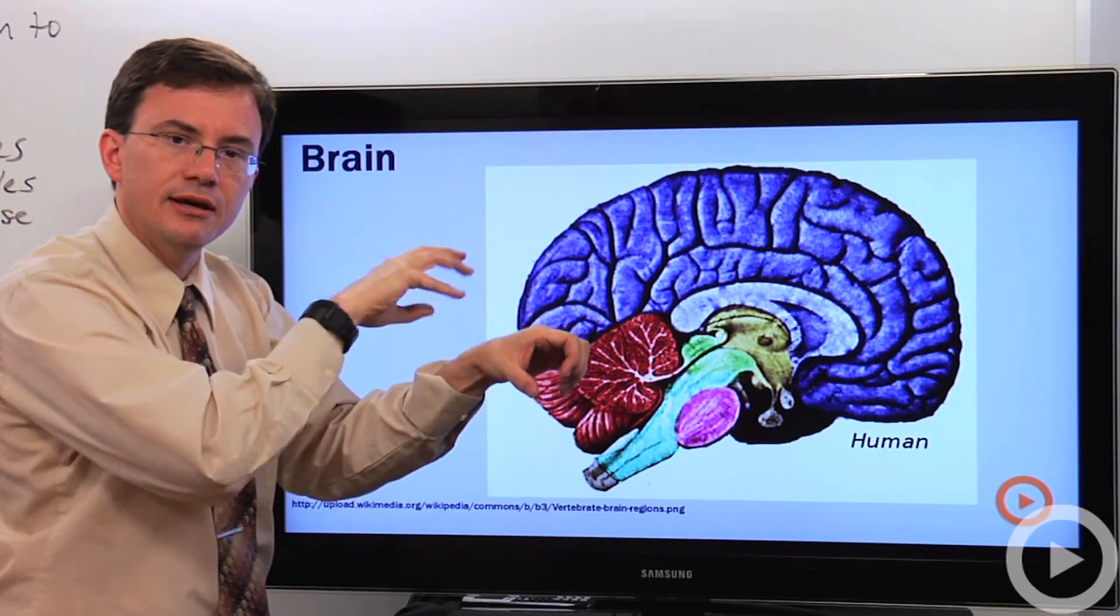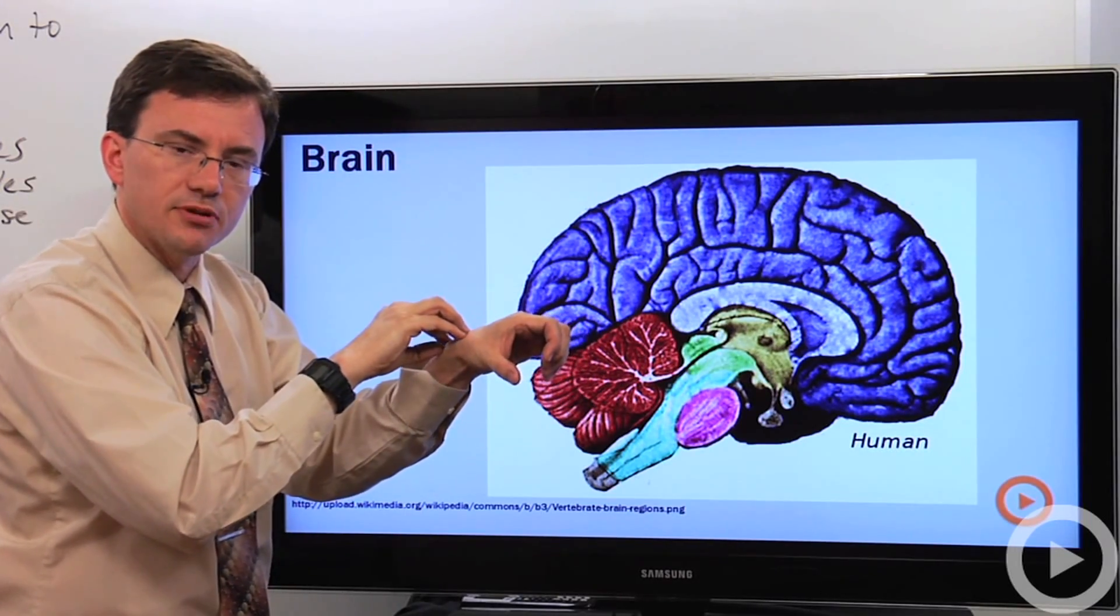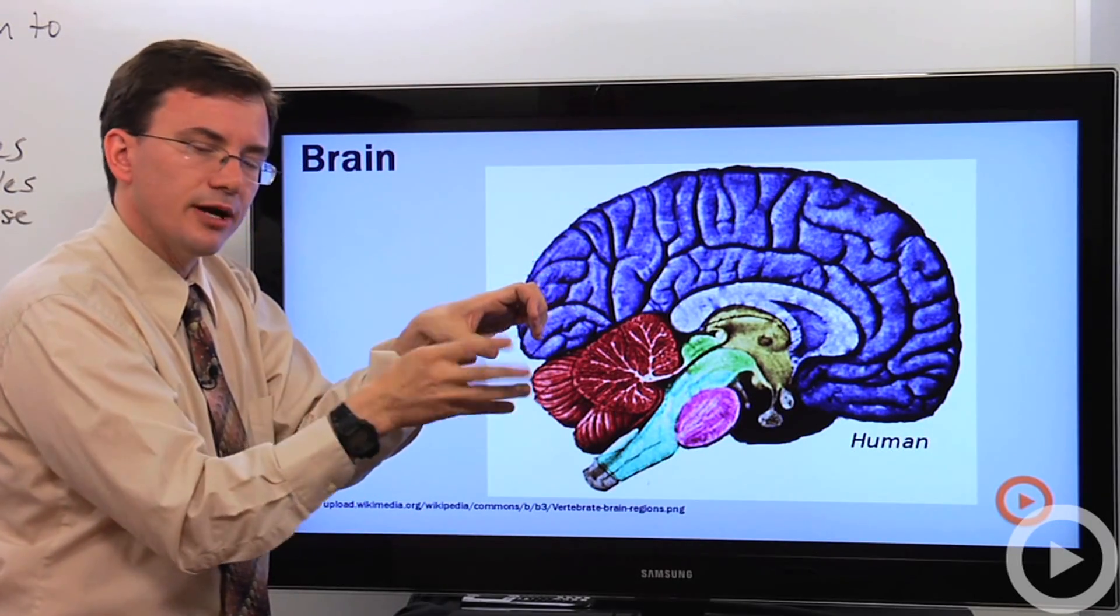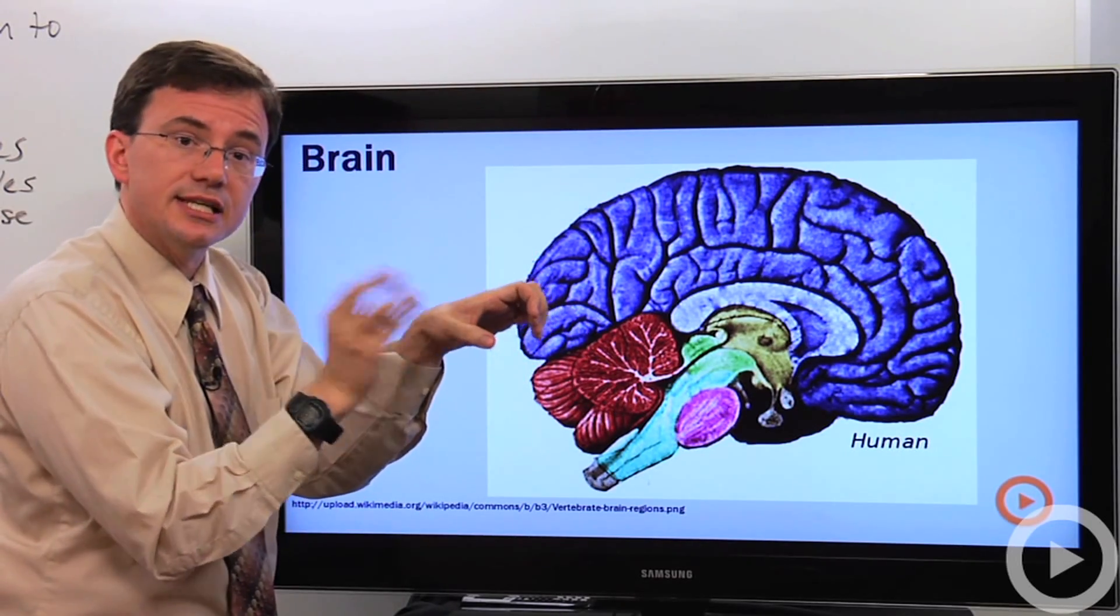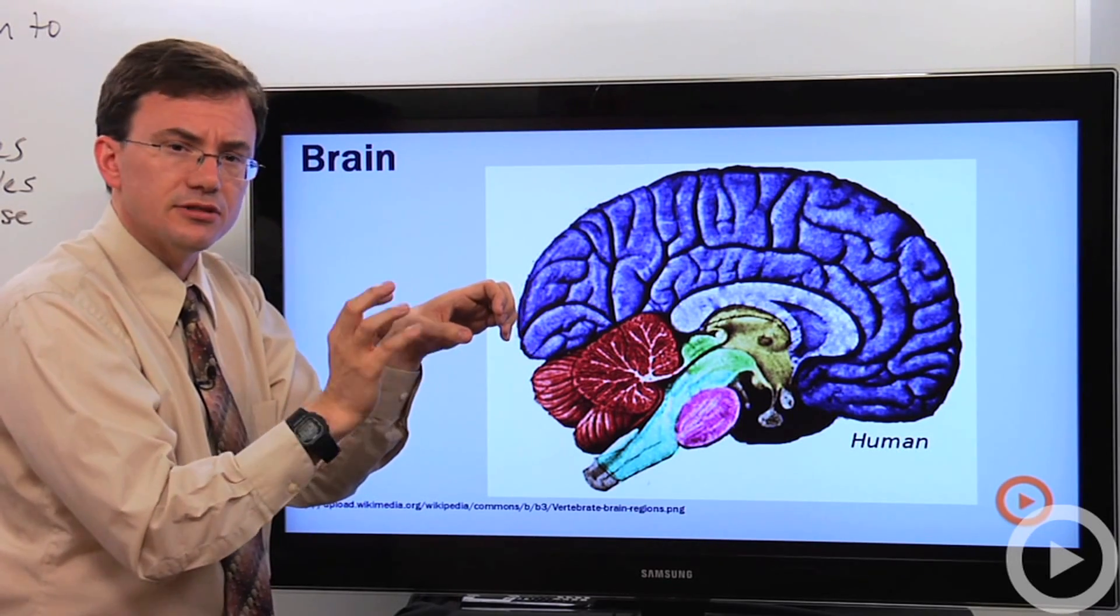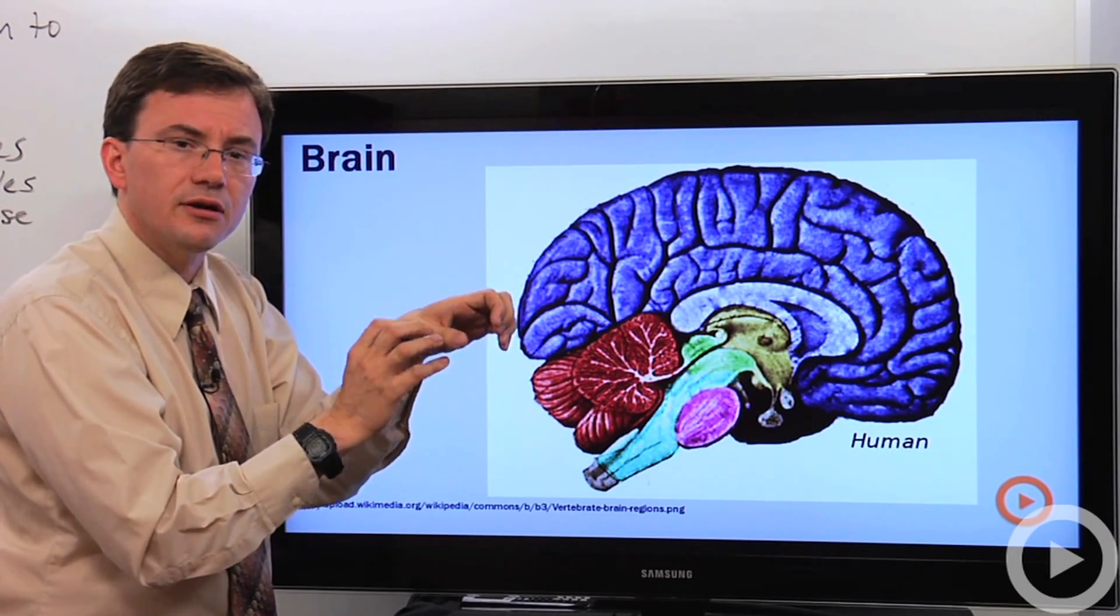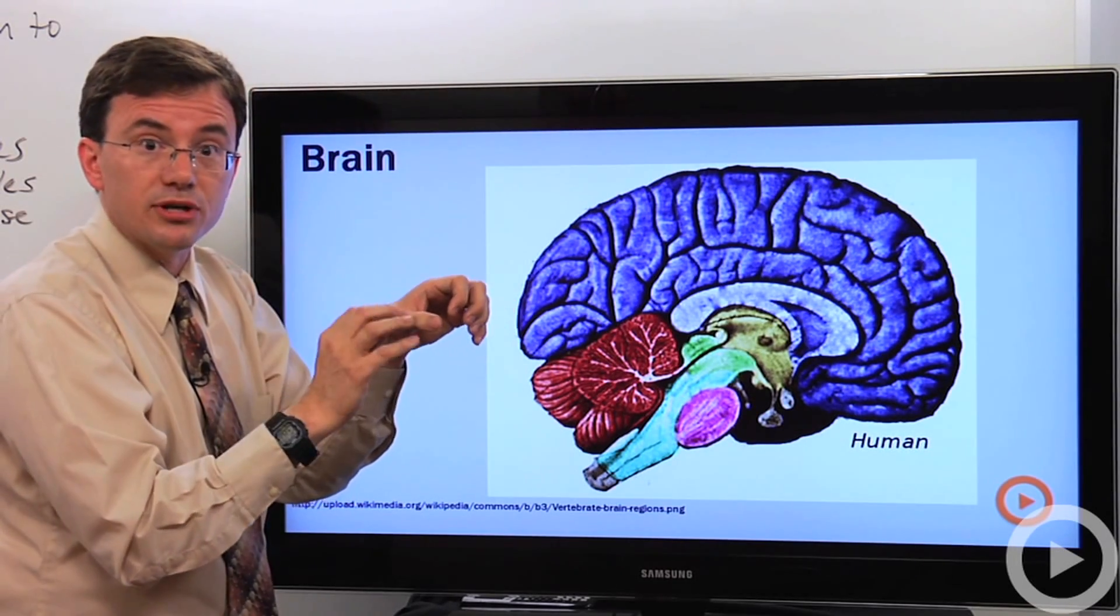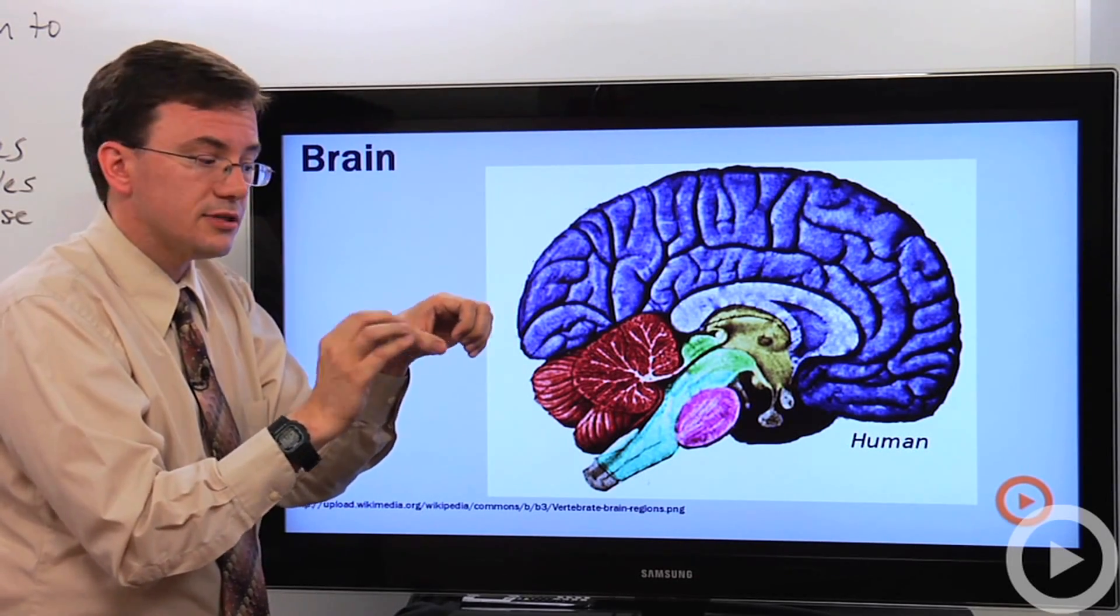Weirdly enough, vision analysis happens in the occipital lobe. I don't know why it's not in the front. It would make a lot more sense. The temporal lobe, which is right by the ear, hey, that makes sense. It's involved in analysis of sound. It's also involved in analyzing things like smell. There's a number of other functions that go on in there involving, there's some language stuff that goes on in there, and memory is actually helped out by the temporal lobe.